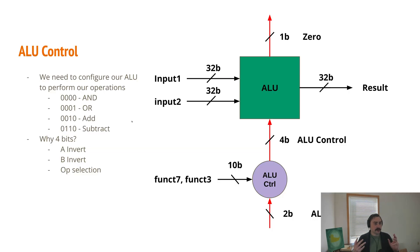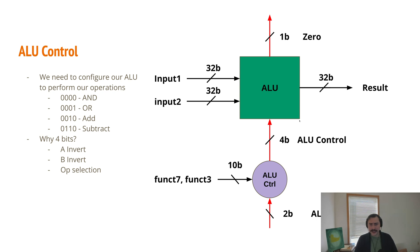Let's talk about configuring our ALU — our arithmetic logic unit — the thing that does our computations inside of our architecture. We need to configure our ALU to perform the different operations we support: AND, OR, addition, and subtraction. We tell it what to do through control signals — a 4-bit control signal that goes into our ALU. So 0000 means AND, 0001 means OR, 0010 means addition, and 0110 means subtraction. Those are the four bit patterns this 4-bit ALU control will take on.